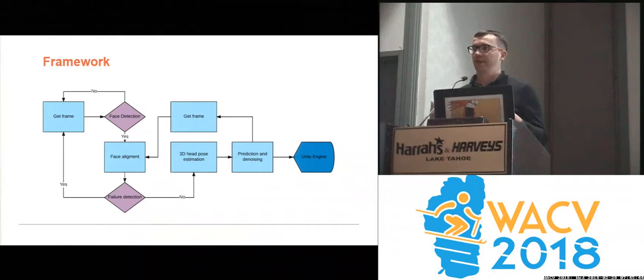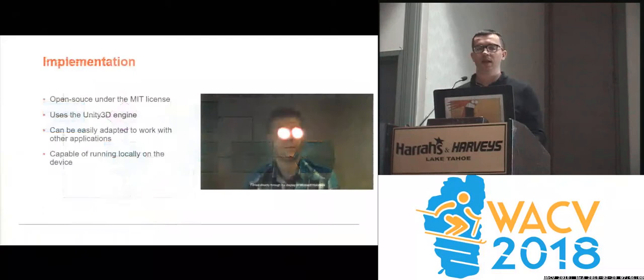Once that is done, the final predicted and denoised head pose is passed to the Unity engine for rendering. At the same time, another frame is grabbed and passed to the face alignment method, which attempts to track the positions of the landmarks based on their location in the previous frame.